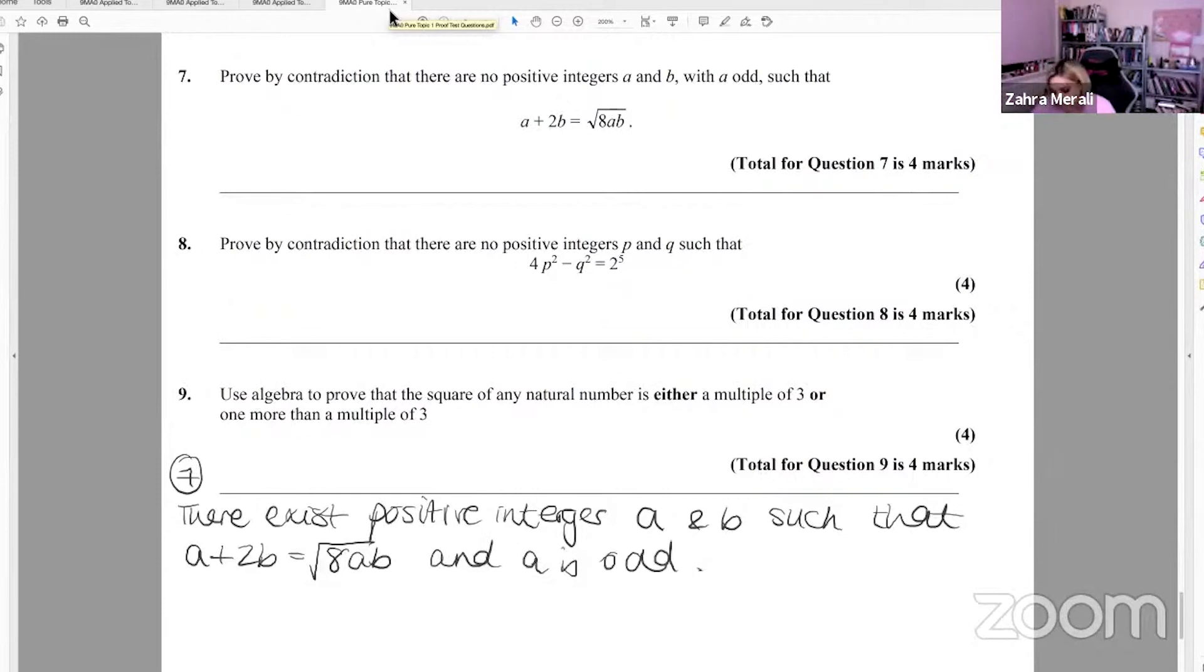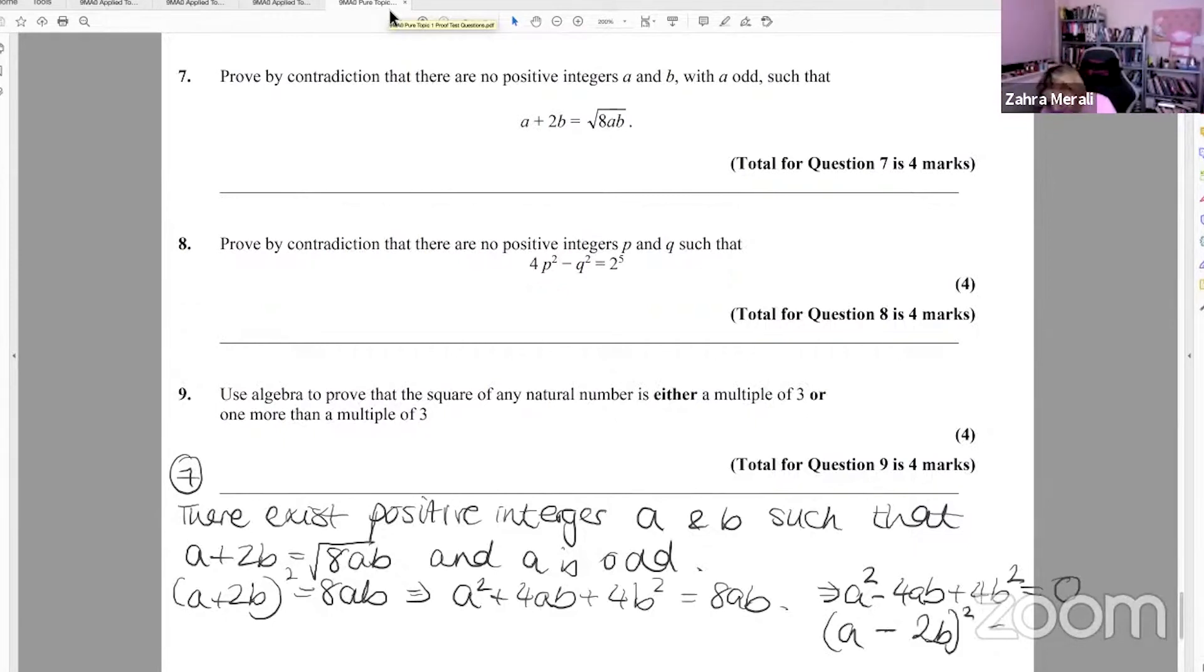So then I look at it and I'd go, okay, the square root, maybe I'd square both sides, see what happens. So if I square both sides, that's going to give me a squared plus 4ab plus 4b squared equals 8ab. Put everything onto one side. I'm going to get a squared minus 4ab plus 4b squared equals zero. And hopefully you may recognize that if you take the square root of the first one, you get a square root of the last one, you've got 2b. If you put a minus in the middle, that's exactly right. So if that equals zero, then you're going to end up with, sorry, I'm going to write it here, a equals 2b.